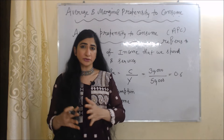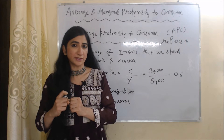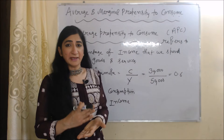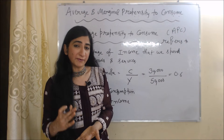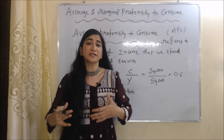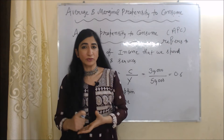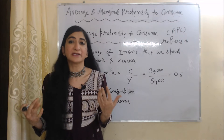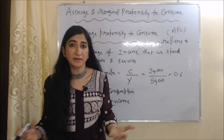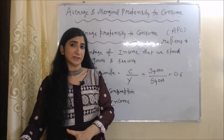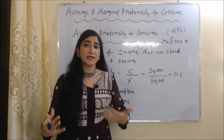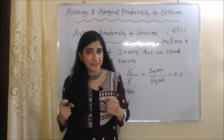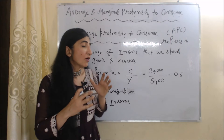So firstly, we are going to talk about average propensity to consume. In short, we can say that APC. APC refers to the percentage of income that we spend on goods and services, or we can say that how much part of our income we spend on goods and services is called our APC.